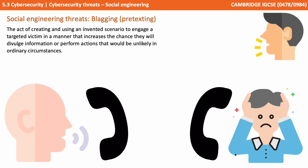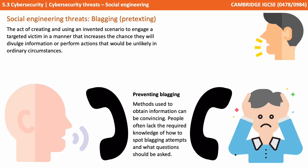Blagging, or pretexting, is the act of creating and using an invented scenario to engage a target victim in a manner that increases the chance that they'll divulge information or perform actions that would be unlikely under ordinary circumstances. Methods used to obtain information via blagging can be very convincing, and people often lack the required knowledge of how to spot blagging attempts and what questions should be asked.